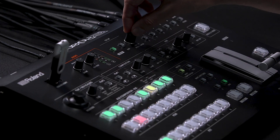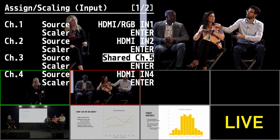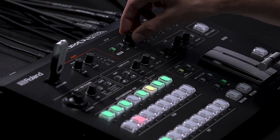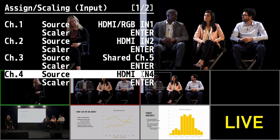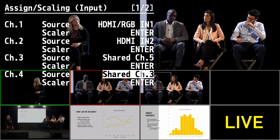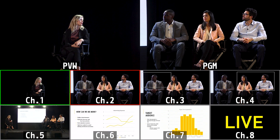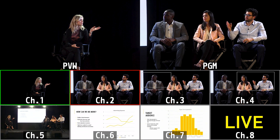I'm going to now change the source so that it's shared with SDI input five. Remember, even though we did a cross point, we want to share it with the original input channel. I will also do this for channel four, and you'll see there are two copies of the source.